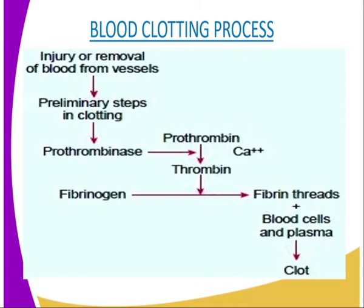In undamaged vessels, blood does not contain thrombin, but it is in the inactive form called prothrombin. The inactive form of thrombin is prothrombin, and it must be activated once the blood vessel is injured to its active form, which is thrombin. Undamaged blood vessels contain epirin, which prevents conversion of prothrombin to thrombin, and another function of epirin is to neutralize any thrombin which may be formed accidentally.